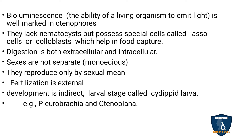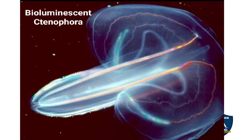Bioluminescence is well marked in Ctenophora. Bioluminescence means the organism emits light — light produced from a living organism. You can see Ctenophora producing light in the dark; in nighttime it produces light, and this property is called bioluminescence.